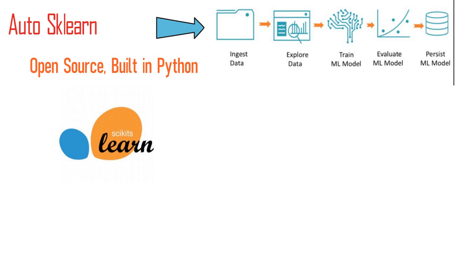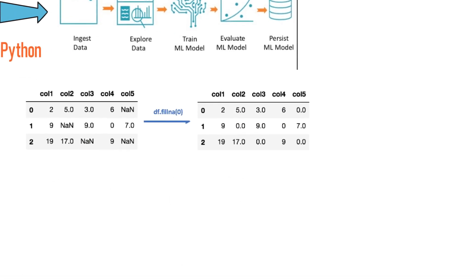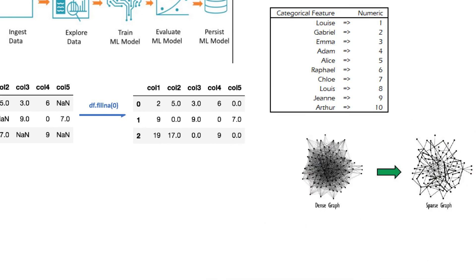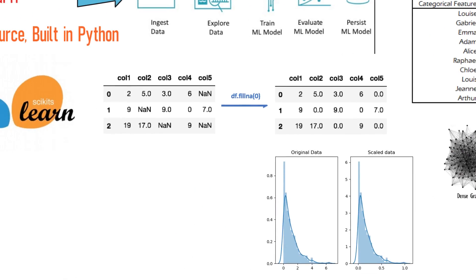AutoSkLearn. It is open source, implemented in Python and built around the scikit-learn library. It contains a machine learning pipeline which takes care of missing values, categorical features, sparse and dense data, and rescaling the data.